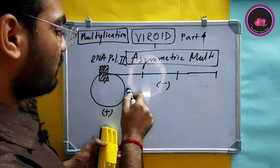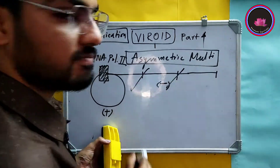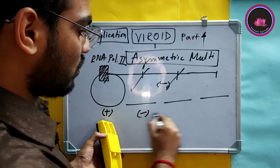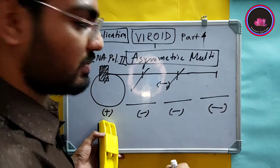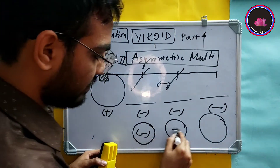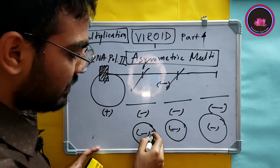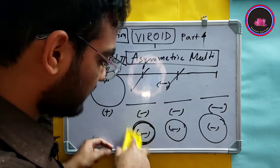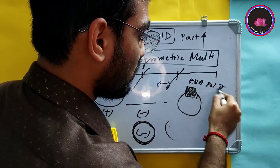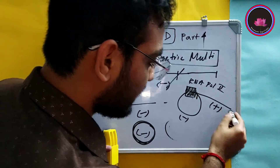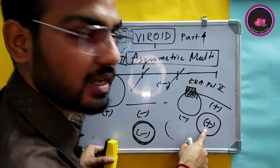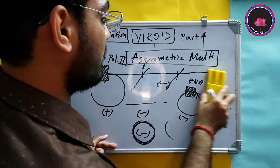After producing the negative strand, they are cut due to self-cleaving activity. After cutting, these negative strands undergo circularization because viral RNA is circular, producing circular negative strands. From these circular negative strands, they again replicate using RNA polymerase 2 and produce the positive strand. After producing the positive strand, they again circularize to produce the positive circular genome. This is the asymmetric multiplication pathway.